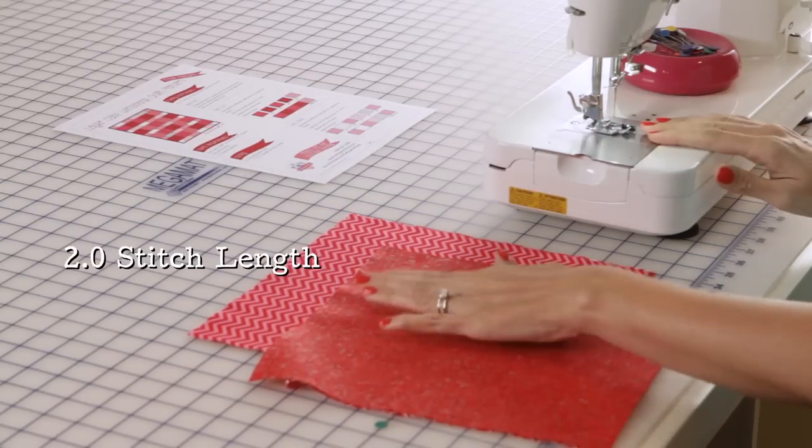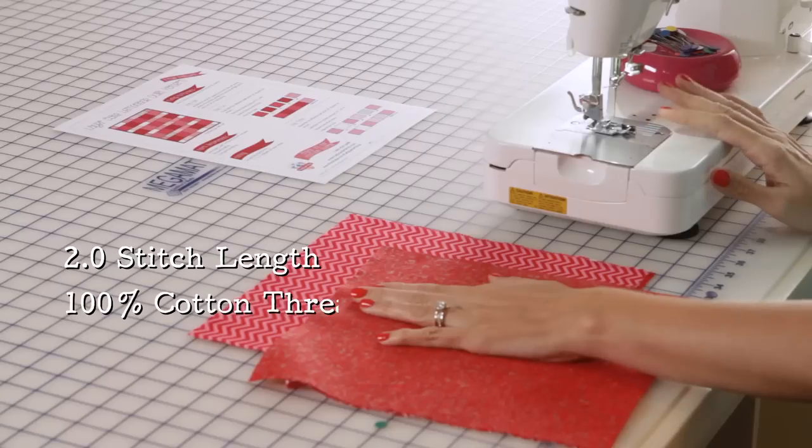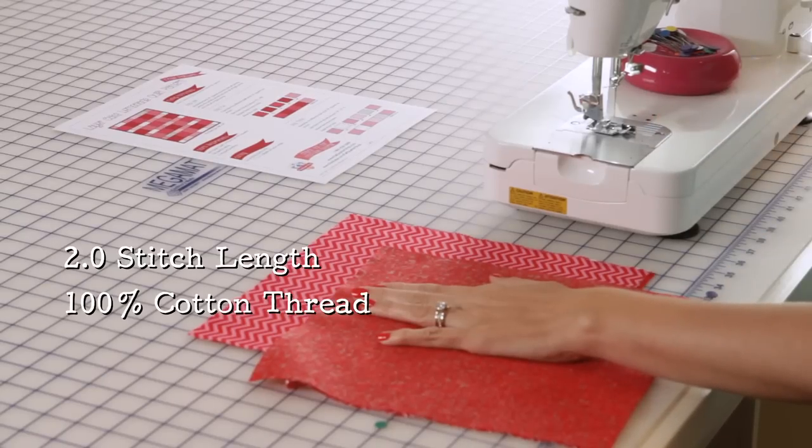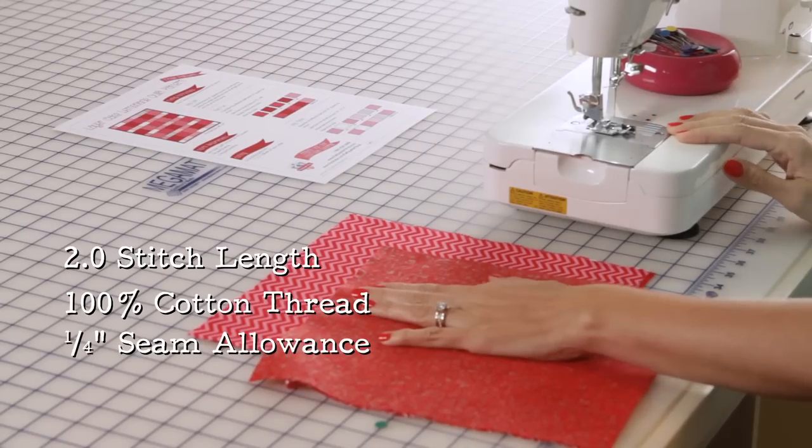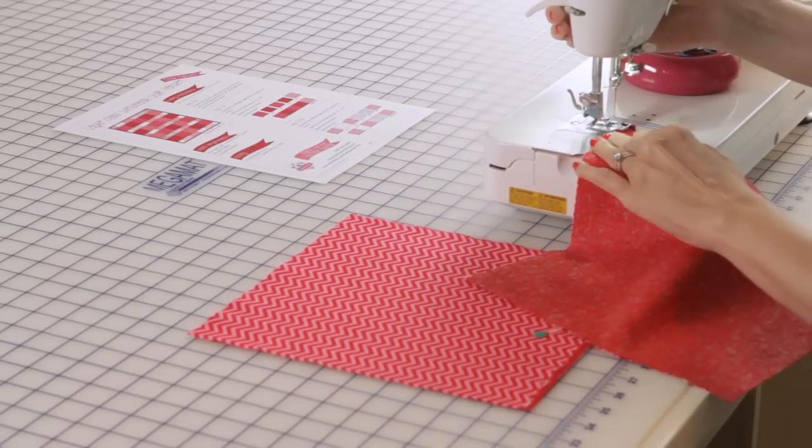When you're sewing, you're going to use a 2.0 stitch length, a hundred percent cotton thread, and a quarter inch seam allowance. So you'll just start sewing.